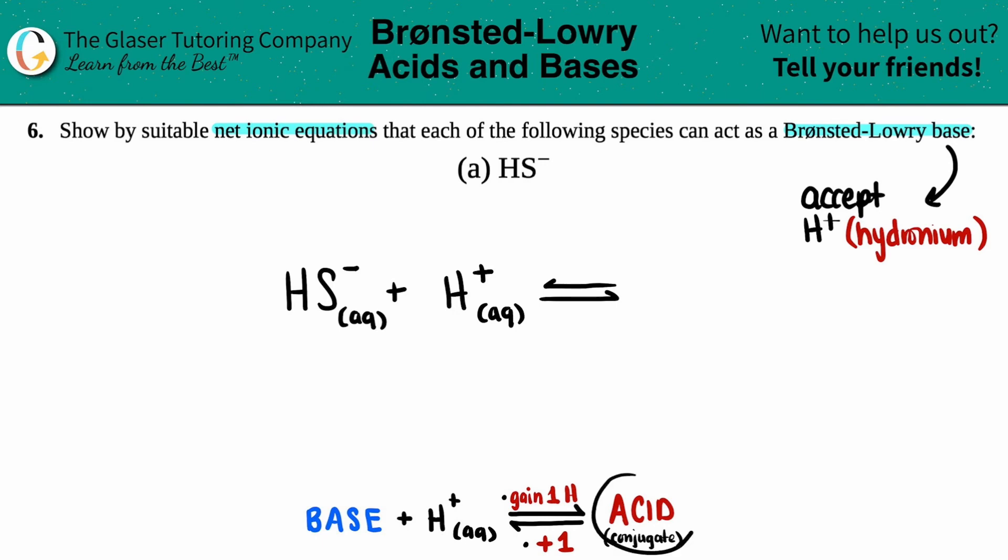Now we just have to write the conjugate acid. So all you got to do is just combine all the elements into one compound. So now I had one H from HS, but now I'm adding another H. So how many H's do I have? I have two H's.